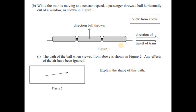While the train moves at constant speed, a passenger throws a ball horizontally out of the window. The path of the ball when viewed from above is shown in figure two. Because air resistance is ignored, there is no horizontal force acting, so the path traveled by the ball is a straight line due to only vertical velocity. No horizontal force means the top-view path is a straight line.